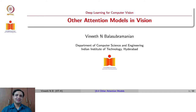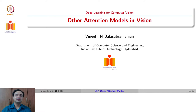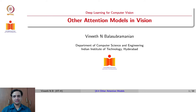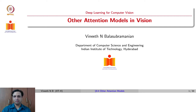Moving on from visual Q&A and visual dialogue, we will now look at how attention has been modeled and used in various different ways. In particular, we look at three specific models: Neural Turing Machines, DRAW which stands for Deep Recurrent Attentive Writer, and Spatial Transformers. Each of these have had a significant impact on the field of deep learning and computer vision, and they use or implement attention in very different ways.